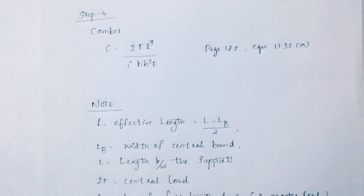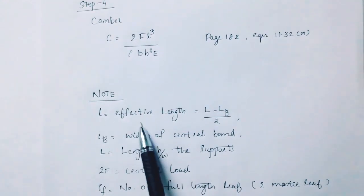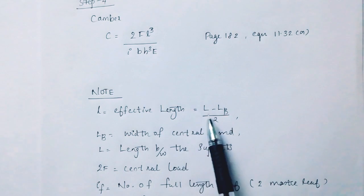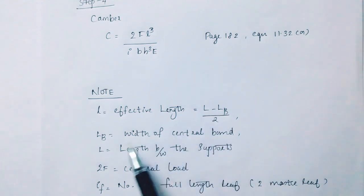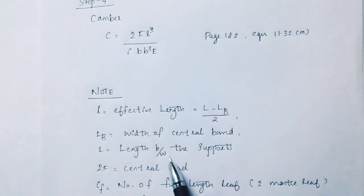Then we have 3 notes, 3 terms. This is effective — L minus Lb divided by 2.